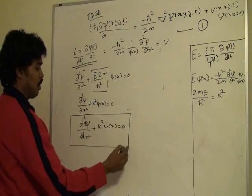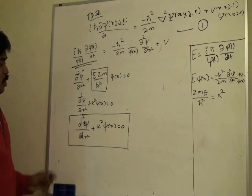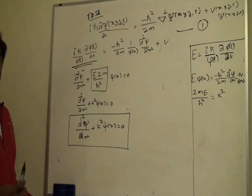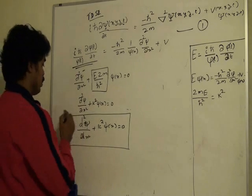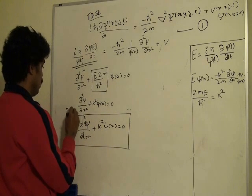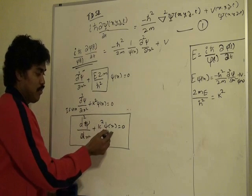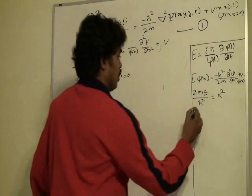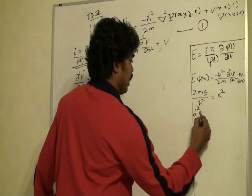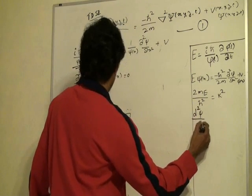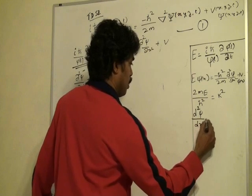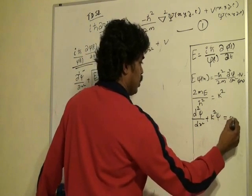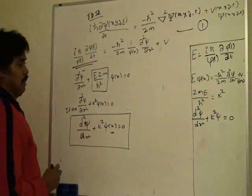whenever we pick a wave function, that should meet this condition if the potential energy of the system is 0. So if V is equal to 0, then the ψ(x) function should meet this condition. So d²ψ/dx² plus k² ψ is equal to 0. This is the condition that needs to be met.